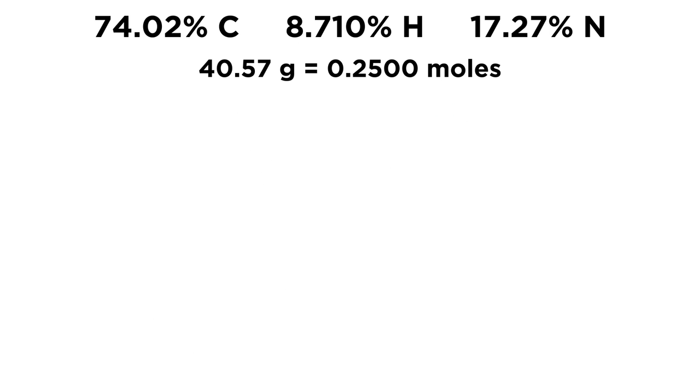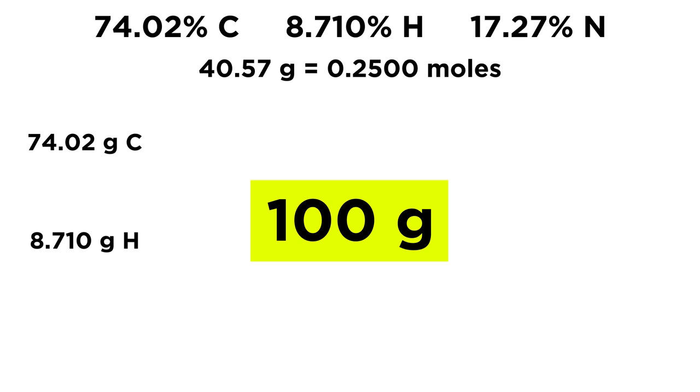So we have our mass percentages up at the top here, and we also have our information that tells us that 40.57 grams of nicotine equals 0.2500 moles of nicotine. The easiest way to do this is to assume some mass of nicotine to start doing some calculations. Since it's totally arbitrary what mass we choose because we're dealing with percentages, let's just use 100 grams and make the math nice and easy on ourselves. So if we have 100 grams of nicotine, that means we must have 74.02 grams of carbon, 8.710 grams of hydrogen, and 17.27 grams of nitrogen. We're just taking those percentages, which are out of 100, and turning them into grams.